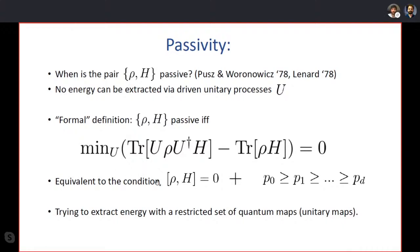This is equivalent to the usual condition: a state is passive if it commutes with the Hamiltonian and if the populations are ordered from largest to smallest in the energy eigenbasis. So the task here is trying to extract energy with a restricted set of quantum maps — in this case, unitary maps.